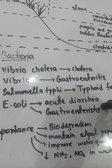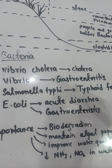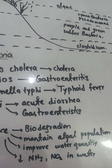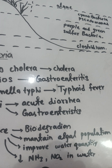Bacteria are very important for biodegradation and decomposition of dead organic matter, making new nutrients available in the water. They also maintain the algal population — when algal population increases, bacteria help reduce it, keeping the water healthy. Additionally, bacteria decrease the amount of ammonia and nitric oxide present in water.